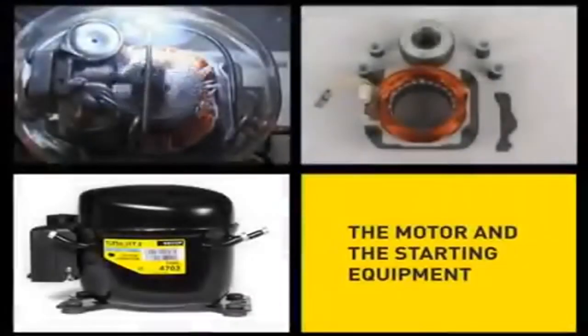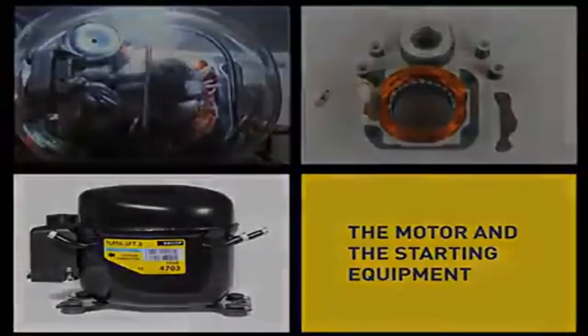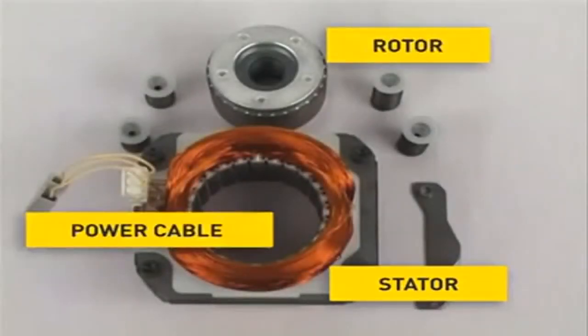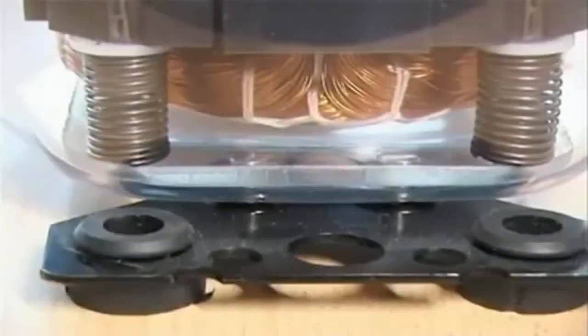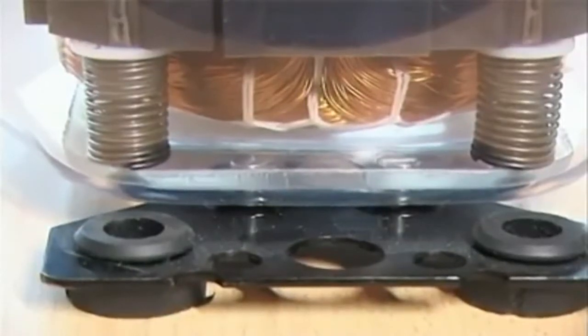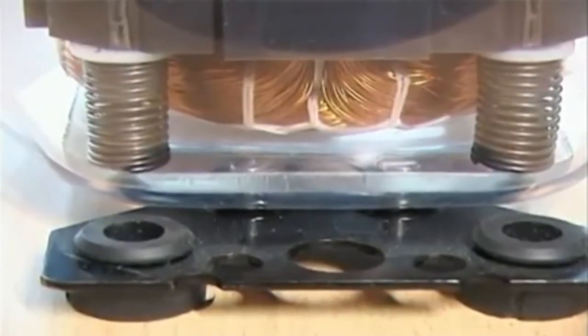The Motor and the Starting Equipment. The Starter, the Rotor and the Power Cable are the main parts of the motor. The motor is mounted onto springs so that vibrations are not transferred to the compressor shell. This ensures a low noise level during operation.